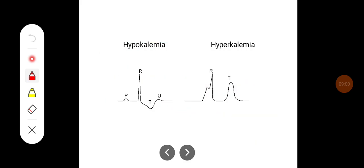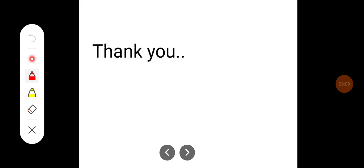So you can observe in hypokalemia there can be ST segment depression, or in hyperkalemia there can be tall slender T waves. So this is in brief about abnormal ECG. Thank you.